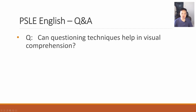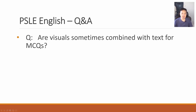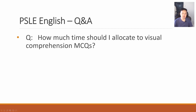Can questioning techniques help in visual comprehension? Students need to question themselves as they read the visual — for example, if you see a picture, ask yourself what this picture is referencing, what is it representing. By asking themselves these questions, they can understand the visual better and do better for the exercise. Are visuals sometimes combined with text for MCQs? Yes — typically it's about 60% images and about 40% text, so students need to combine all the information and understand the visual as much as possible. Allocate about 15 to 20 minutes for this exercise.